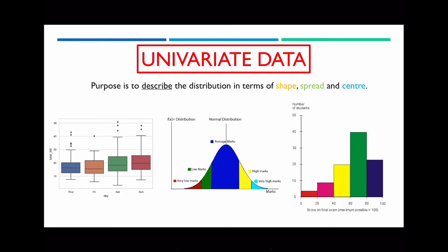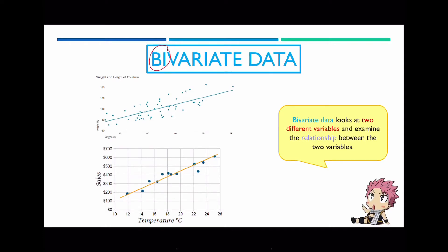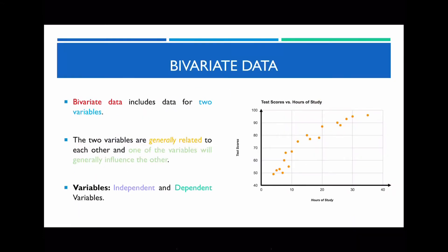You'll remember that 'uni' is a prefix indicating one, so univariate means one single variable. Whereas bivariate data — 'bi' is a prefix indicating two — so bivariate data actually looks at two different types of variables. What we generally try to do is see whether there is an actual relationship between these two variables. For instance, I'm looking at whether there's a relationship between the weight and the height of a child, or this graph that maps out the relationship between the number of ice cream sales versus the temperature. One variable from the two is going to influence or affect the outcome or values for the other variable.